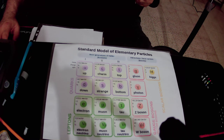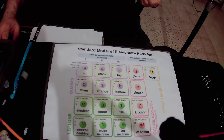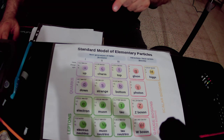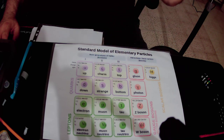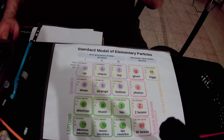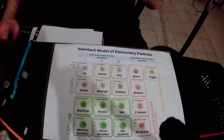The protons and neutrons in the nucleus of the atom are not elementary particles, because they are composed of quarks. There are six types of quarks among these 17 elementary particles, and quarks are the fundamental particles that cannot be divided further.